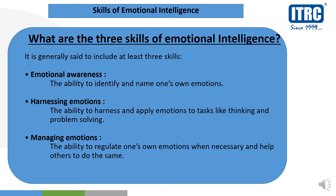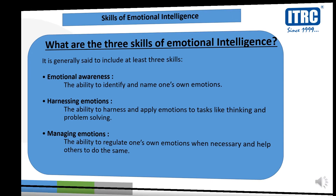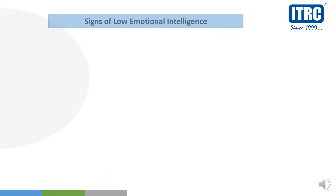Now, the skills of emotional intelligence. Generally there are three skills: emotional awareness — identifying your emotions and naming them; harnessing emotions — how you apply your emotions to your thinking and problem solving; and managing emotions — how you regulate your own emotions when you need to, or regulate others when necessary.